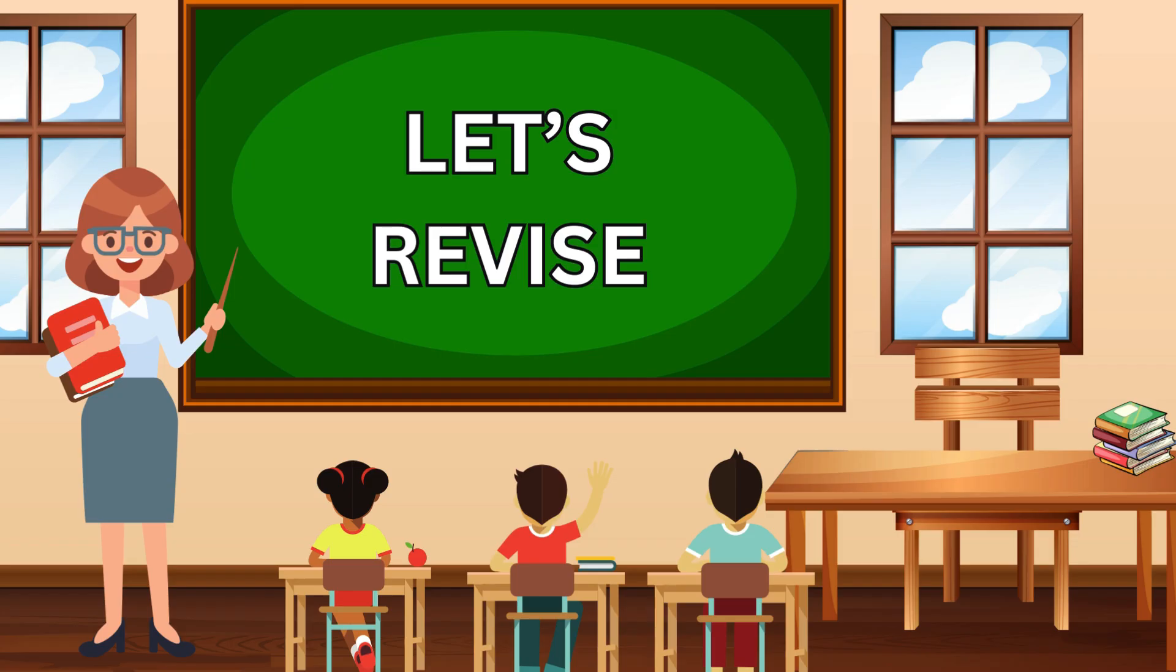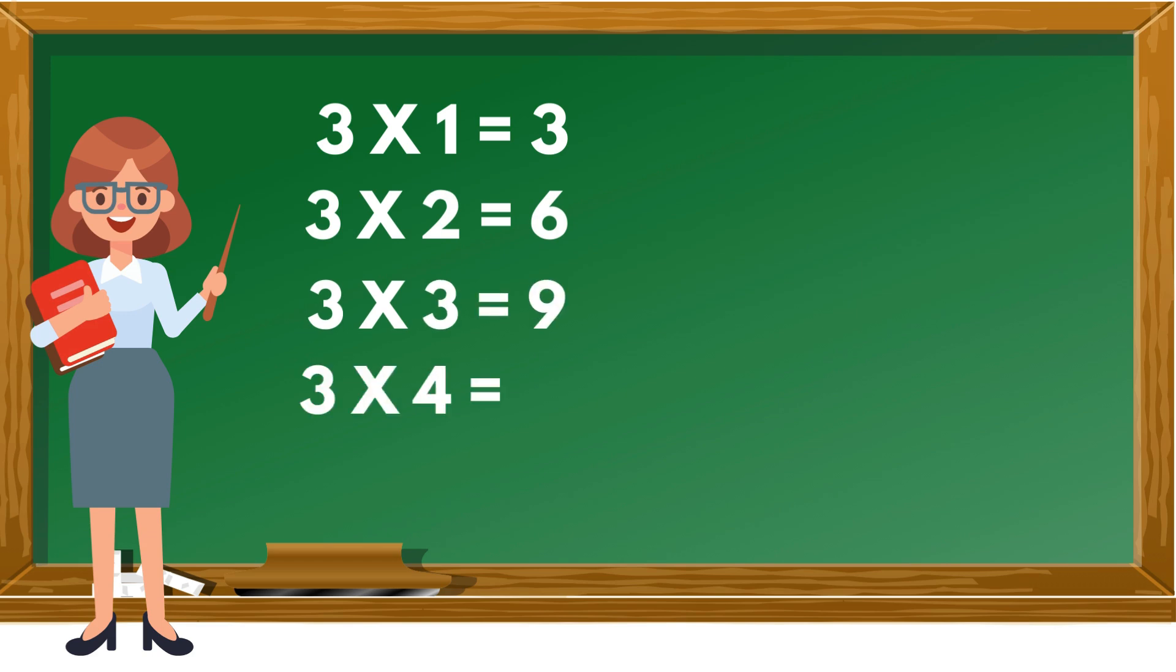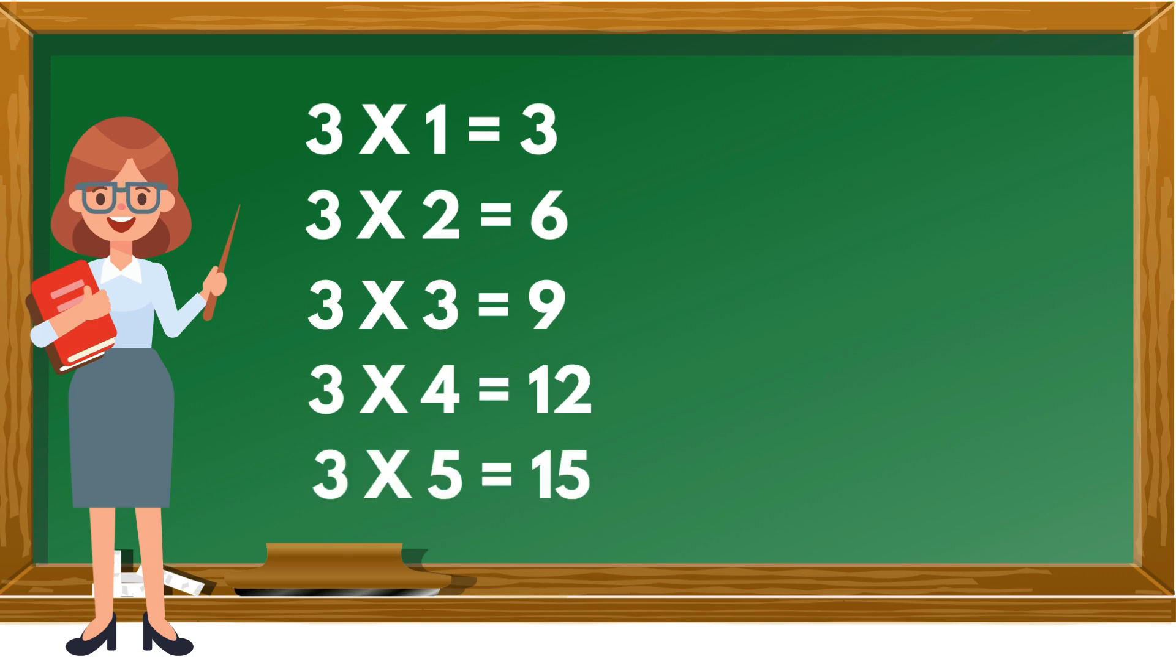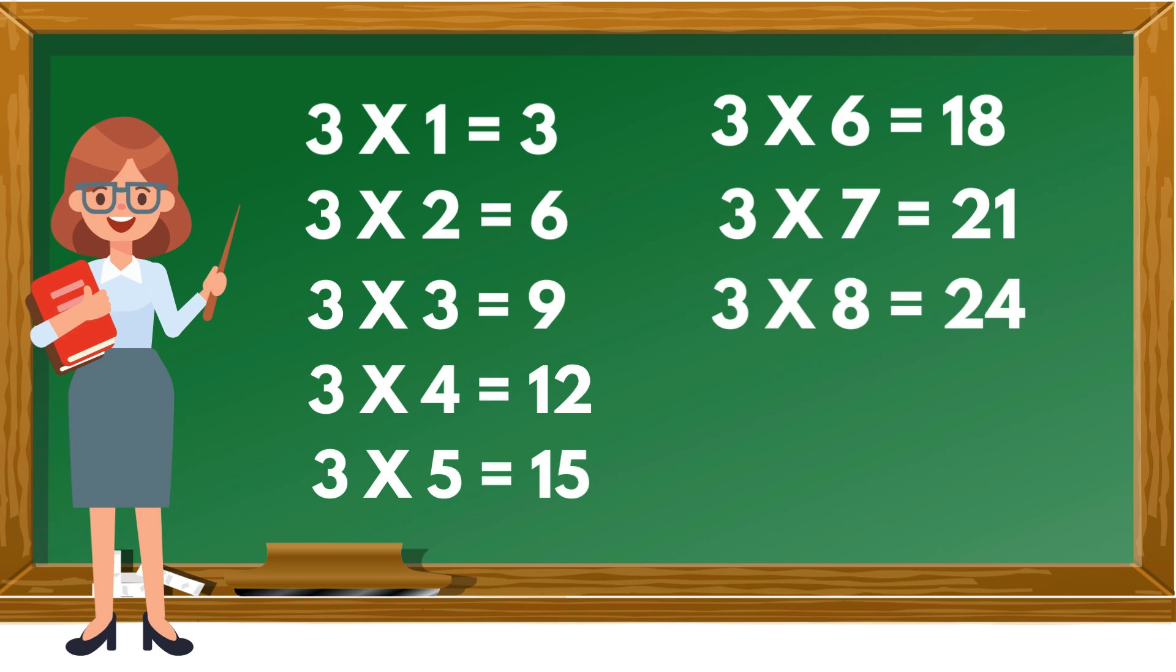Now, let's revise. 3 ones are 3, 3 twos are 6, 3 threes are 9, 3 fours are 12, 3 fives are 15, 3 sixes are 18, 3 sevens are 21, 3 eights are 24, 3 nines are 27, 3 tens are 30.